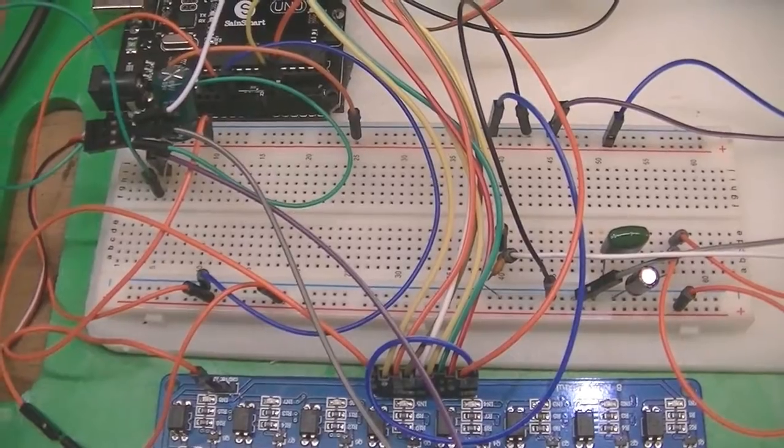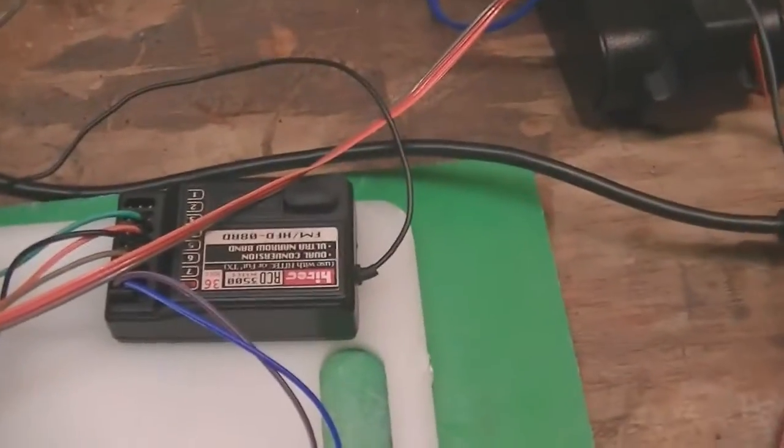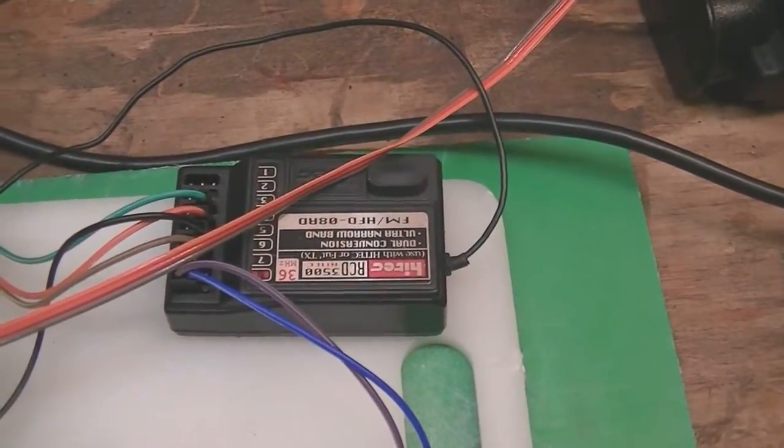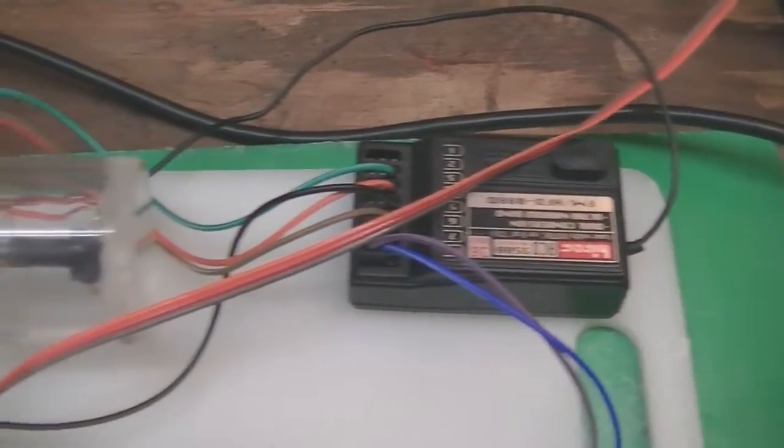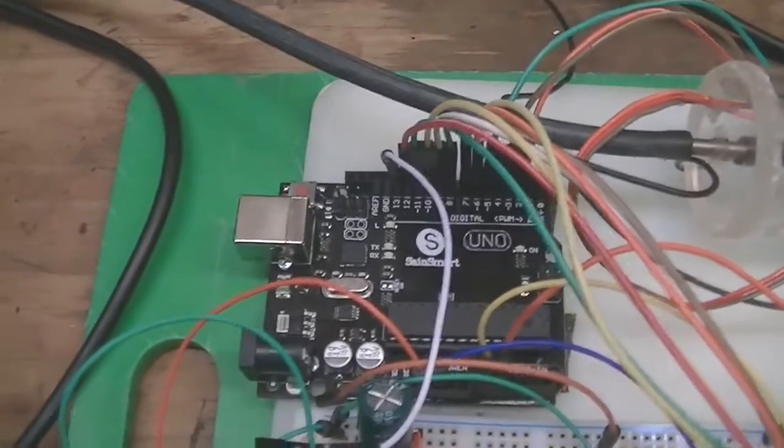So the inputs that I'm using are, first of all, the radio receiver, which is a seven-channel radio receiver. I've got four channels from that running straight into the Arduino.